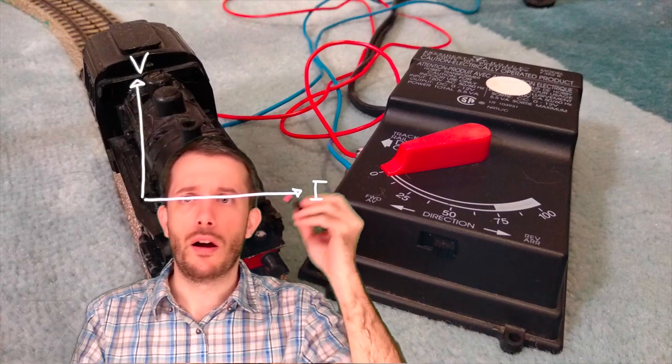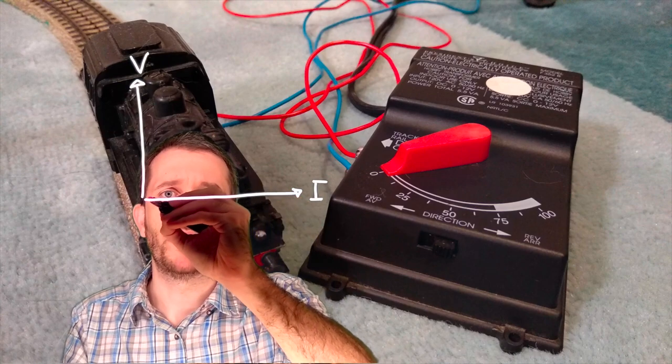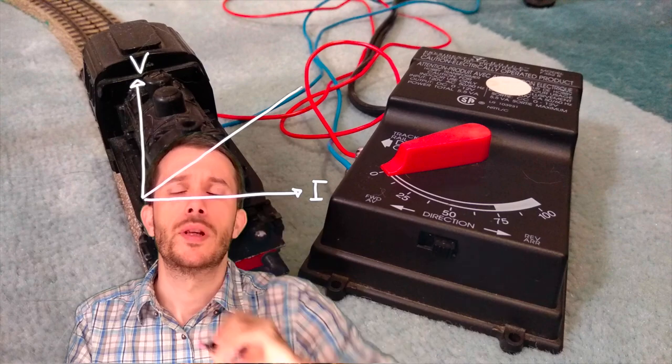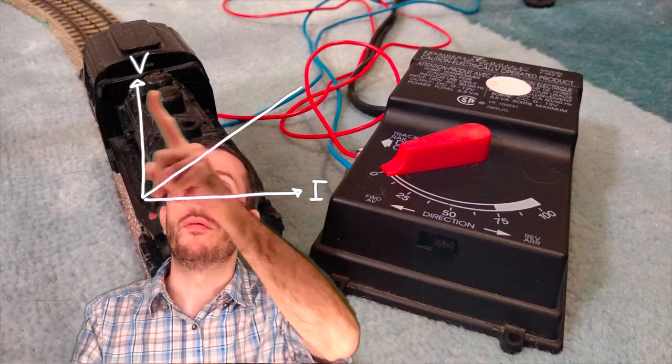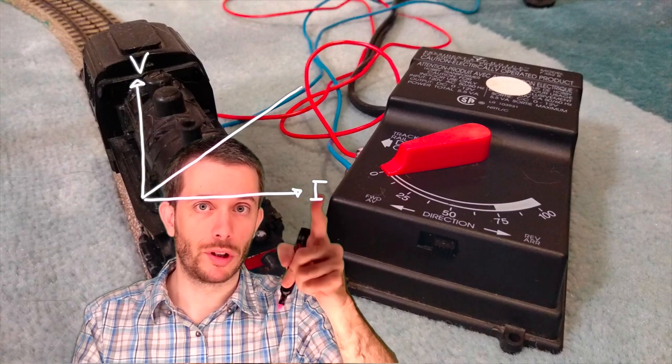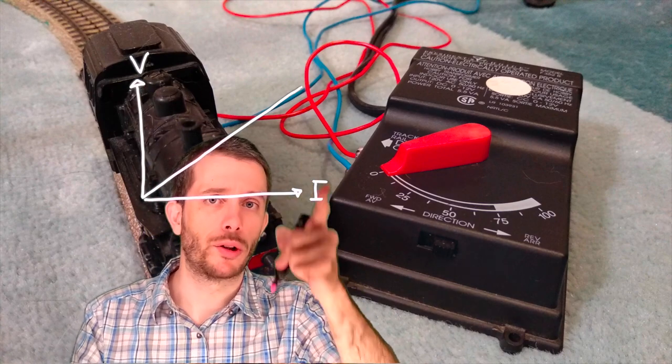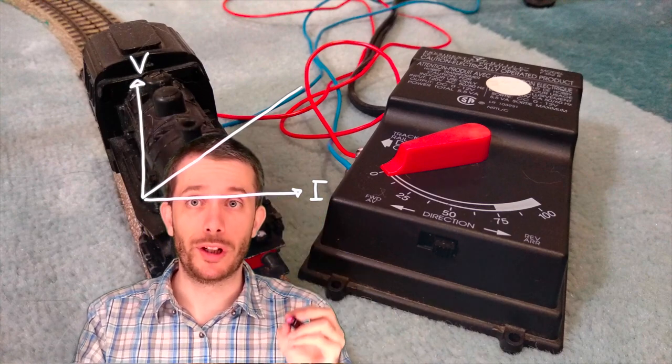And what will happen is we will get a graph that looks like this. So it looks like the voltage is proportional to the current. The more voltage I have, the more current I have, the more voltage I have.